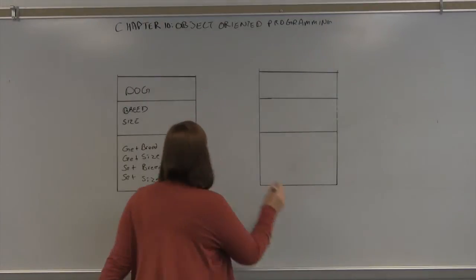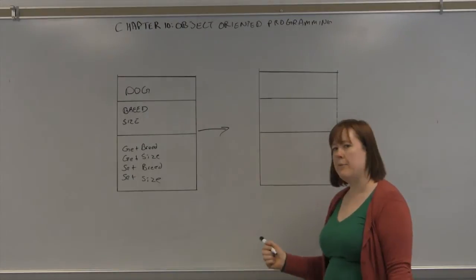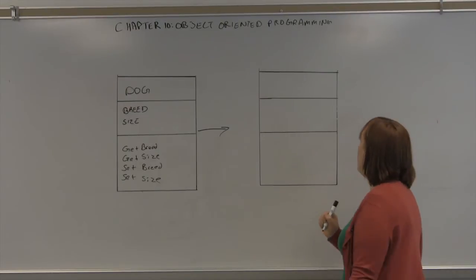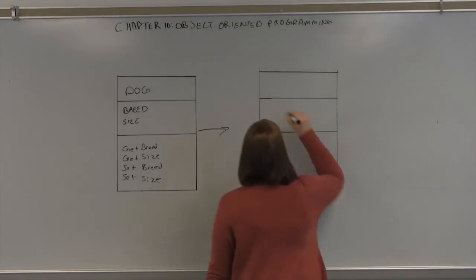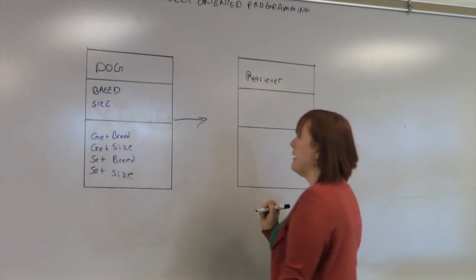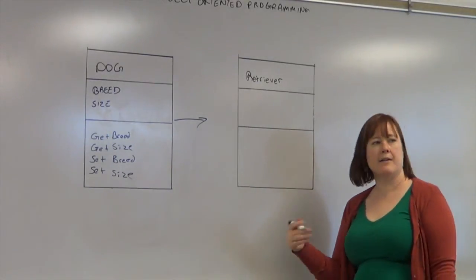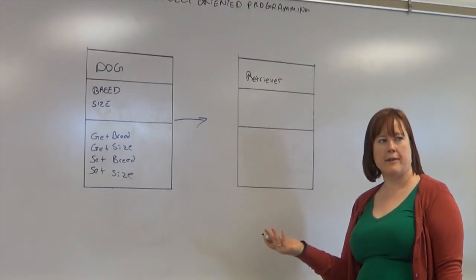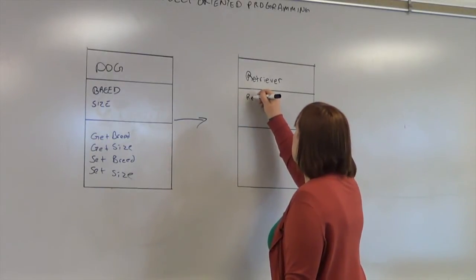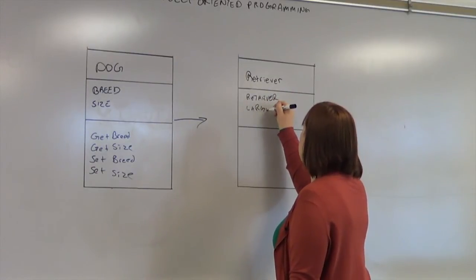Now, we can extend this further. We can take a dog and we can be more specific. Let's say that we want to further define this into a retriever. And a retriever is going to have certain characteristics that come from being a dog and certain characteristics that are just characteristics of being a retriever. For example, the breed will be retriever. And we'll just say the size is large. But we can further define it.